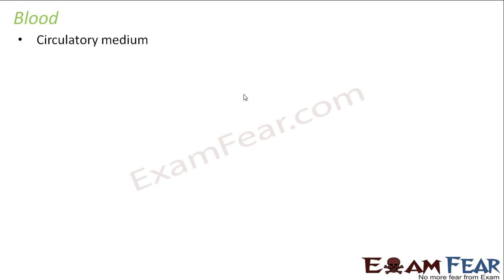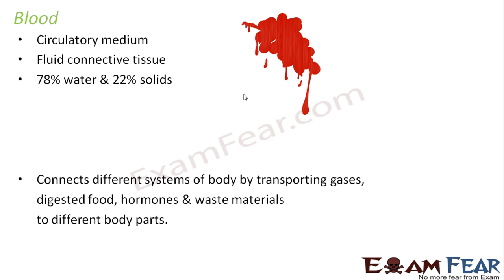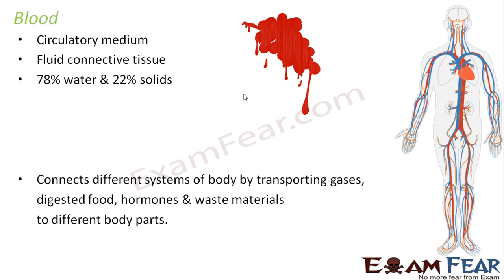What is blood? It is the circulatory medium — the fluid which actually carries substances from one place to another. Blood is a fluid connective tissue. It is actually 78% water and only 22% solids, so it has a lot of water in it. It connects different systems of the body by transporting gases, digested food, hormones, and waste materials to different body parts. In this picture you can see how blood connects even the distant parts of the body.